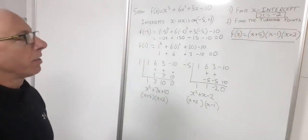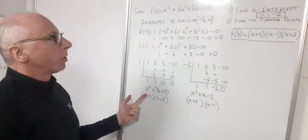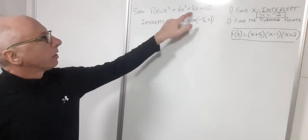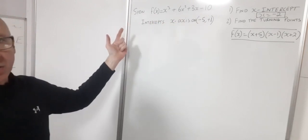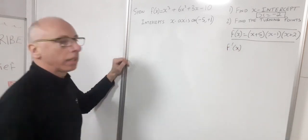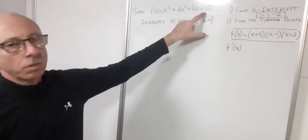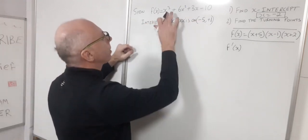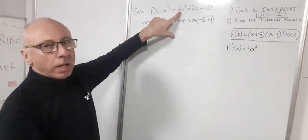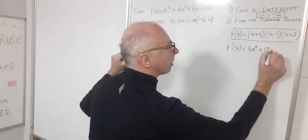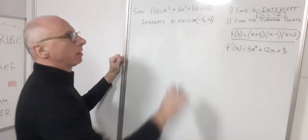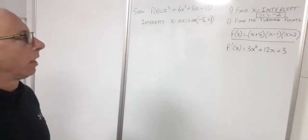Next I need to find the turning points. So I take my function, and to find the turning points I want the derivative — f prime of x. As this is a polynomial, I just use the power rule along all the terms. x cubed gives me 3x squared. 6x squared comes down to 12x. Then 3x reduces to 3. And the minus 10 disappears.